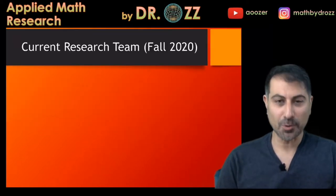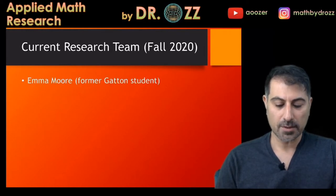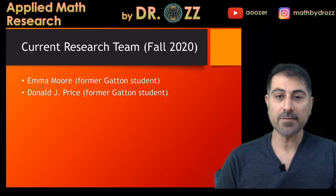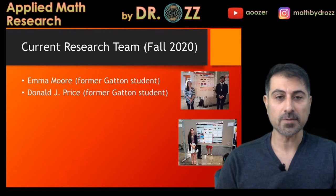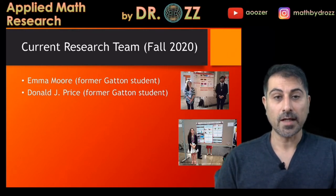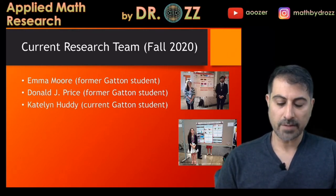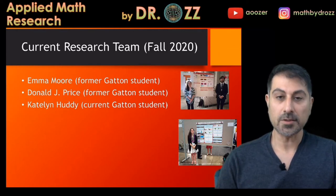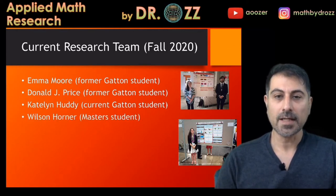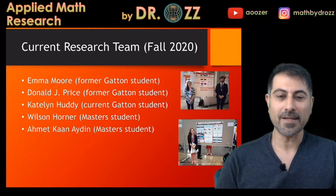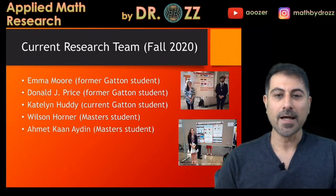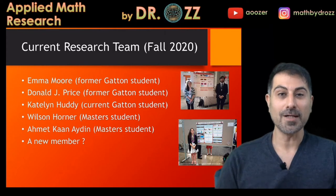I currently have a small research team for fall 2020. I have Emma Moore, she was a former Gatton student. I have DJ Price, he was also a former Gatton student, and they gave plenty of talks in various parts of the state and also in the U.S. I have Caitlin Hadi, she's a current Gatton student. I have Wilson Horner, he's a master's student, and I have another master's student, Ahmed Aydan, and he could be the new member of the research team.